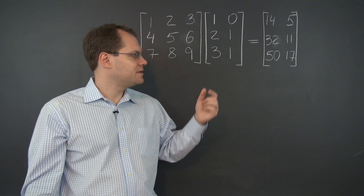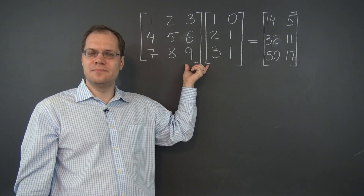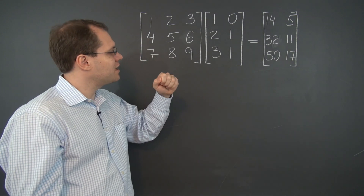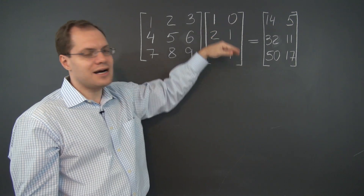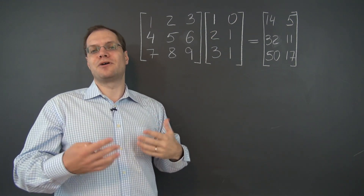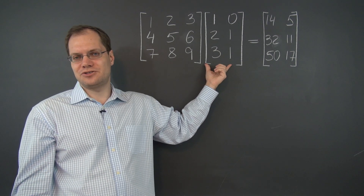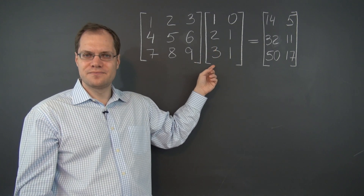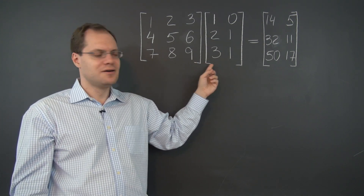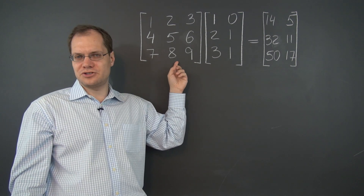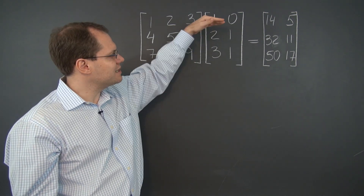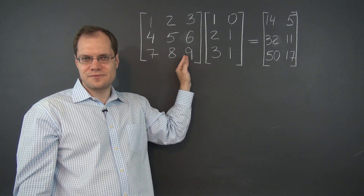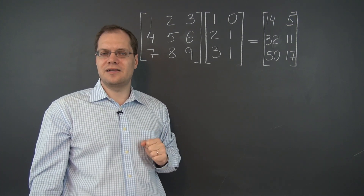Now what about compatibility? These matrices are clearly compatible, but we have to change the wording in the compatibility criterion a little bit. We now have to refer to the height of this matrix — we can no longer just say the number of entries, because the number of entries in this matrix is 6. So we say: the height of the matrix on the right must equal the width of the matrix on the left. Equivalently, the number of rows in the matrix on the right must equal the number of columns in the matrix on the left.